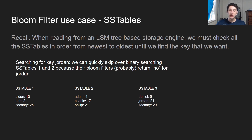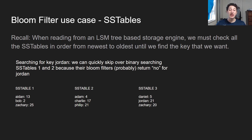So in my example below, I would check the Bloom Filters for SSTable 1 and 2 for the key Jordan, and hopefully the Bloom Filter would tell me Jordan's not in there. As a result, I would then look at the Bloom Filter for SSTable 3, which would say Jordan might be in here, and then I'd run binary search and find my proper key. But remember, it's possible that the Bloom Filter for SSTable 1 or 2 would say that Jordan is actually in there, and if so, I would waste some time searching those tables to no avail.